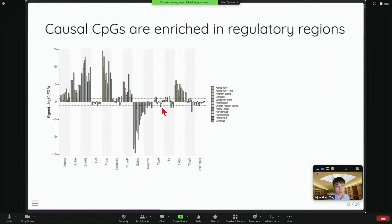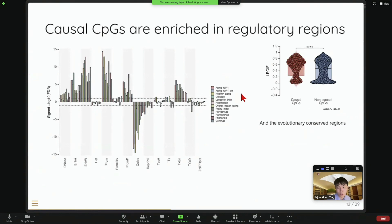And we did some enrichment analysis to see whether the CpG sites we identified are enriching certain regions. And we showed that they are kind of enriching this functional region. For example, the enhancer and promoter. But they're depleted in this non-expressed quiescent region. And we also showed that the causal CpG sites we identified tend to be more conserved during the evolution.